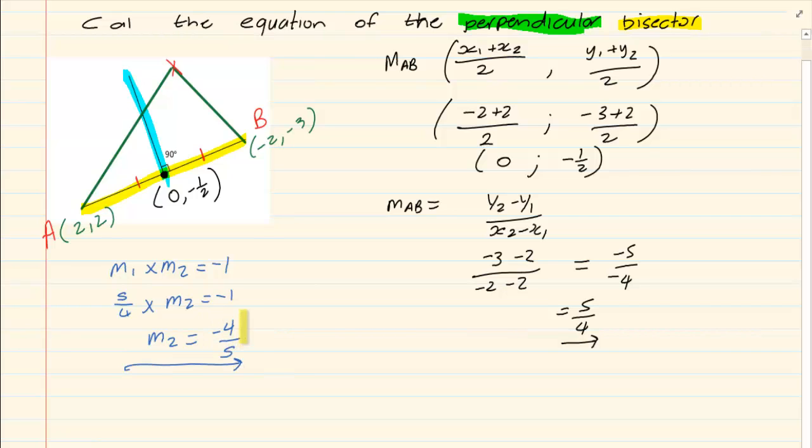Now we have got the gradient and we have got the point. All we have to do is substitute into the formula for a straight line. y minus y1 is equal to mx minus x1.